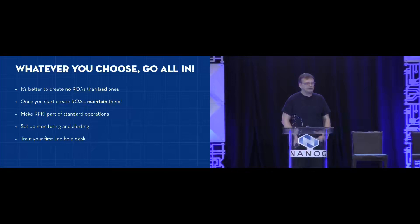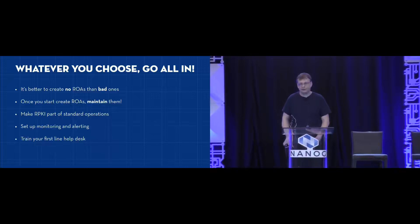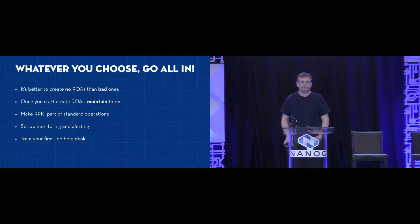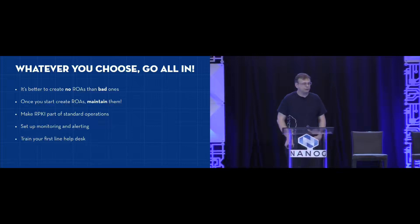Before we get into which solution is right for you, an important point: if you decide to publish ROAs — which of course you should — you should go all in. If there's no ROA for a certain prefix, that doesn't matter; there are just no filters and everything works fine. But if you start publishing ROAs and they're wrong, your prefixes may not be available anymore. An important point is that once you started creating ROAs, you have to maintain them. If you change your topology or your routes, make sure to remember to update your ROAs.